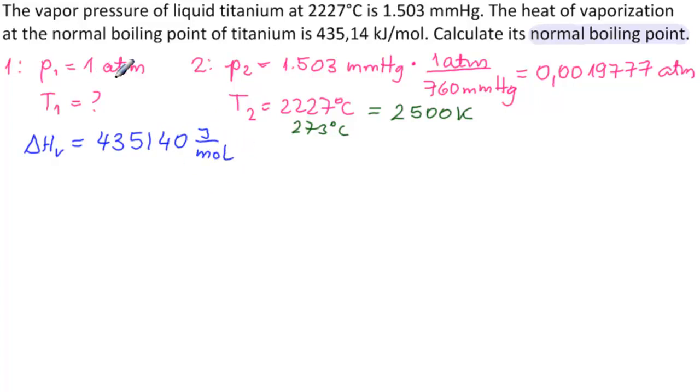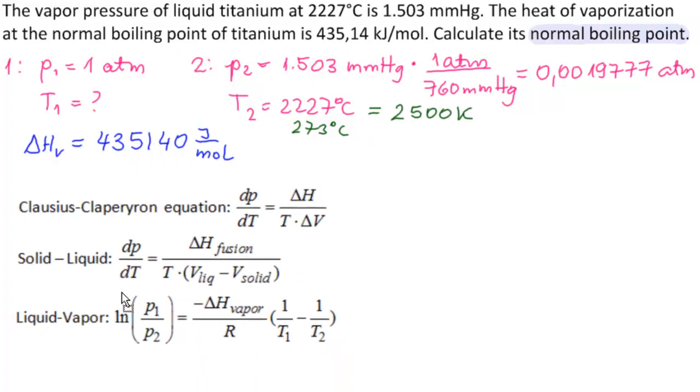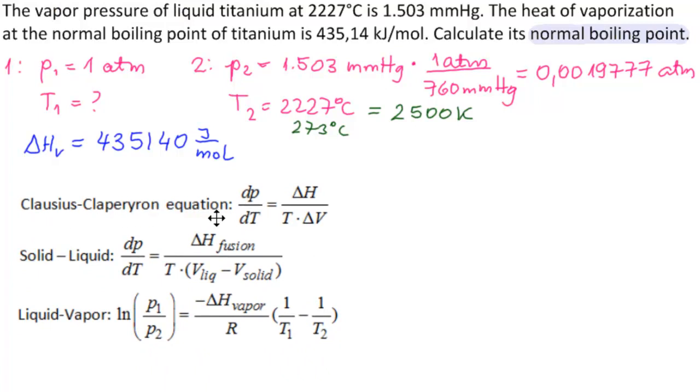So we have four pieces of information, and we're looking for number five. We need a formula that relates these. Notice that we're looking at liquid and vapor, so we're going to be using the Clausius-Clapeyron equation. We're looking at the vapor-liquid one, which is this one right here, and it has exactly everything we need in it.